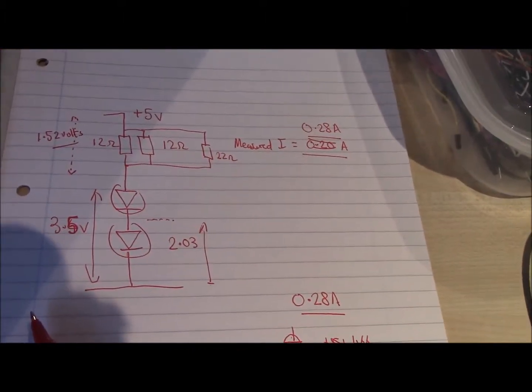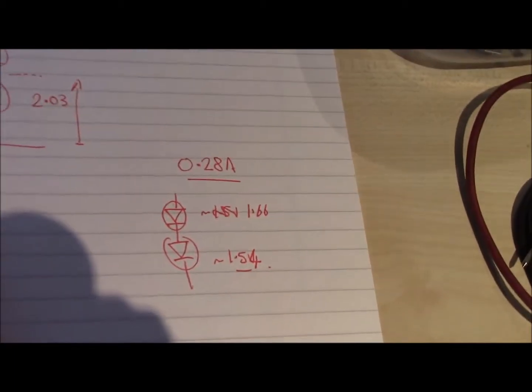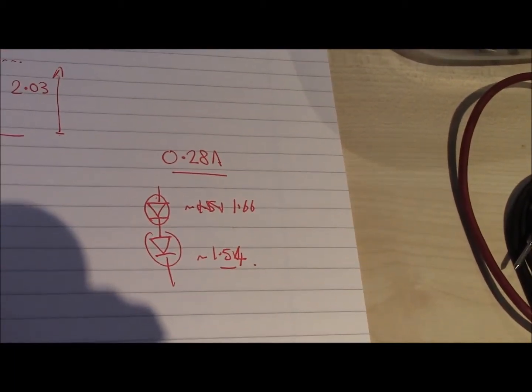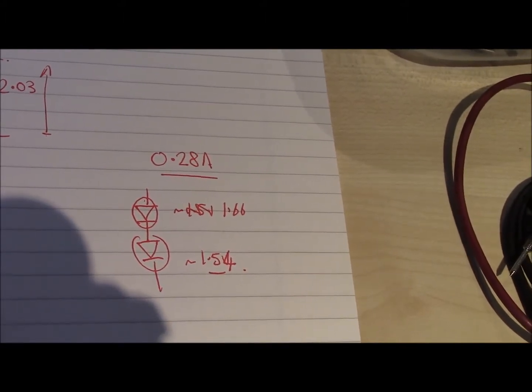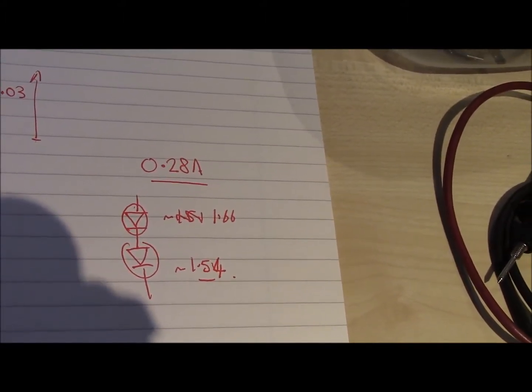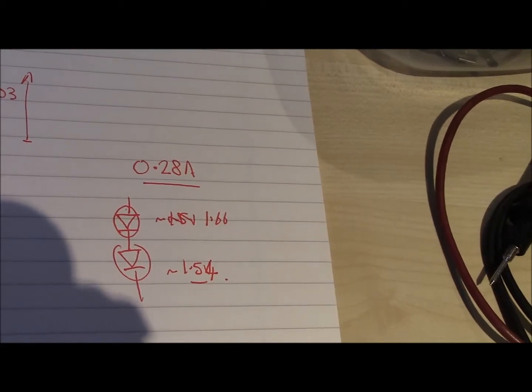This is our little circuit here for testing, and we are keeping track of things. What I have ascertained is for about 0.28 amps through both of them, they have about 1.5 volts each, 1.54 and 1.66.